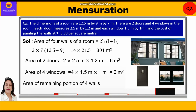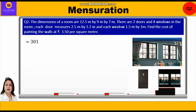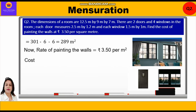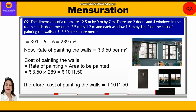Area of remaining portion of four walls to be painted equals area of four walls minus area of doors minus area of windows: 301 − 6 − 6 = 289 meters square. Cost of painting = rate × area = 3.50 × 289 = rupees 1011.50. Therefore, the cost of painting the walls is rupees 1011.50.